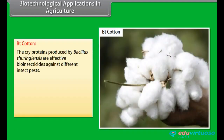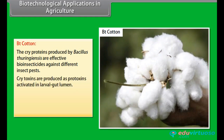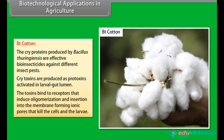BT Cotton. The cryoproteins produced by Bacillus thuringiensis are effective bioinsecticides against different insect pests. Cryoproteins are produced as protoxins activated in the larval gut lumen. The toxins bind to receptors that induce oligomerization and insertion into the membrane, forming ionic pores that kill the cells and the larva.